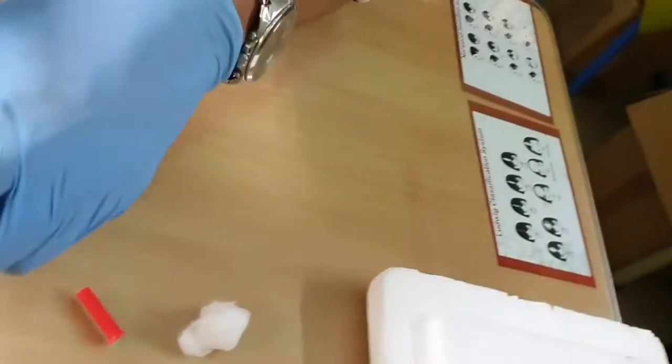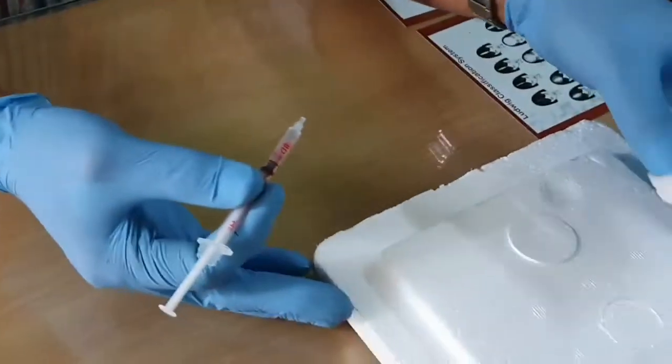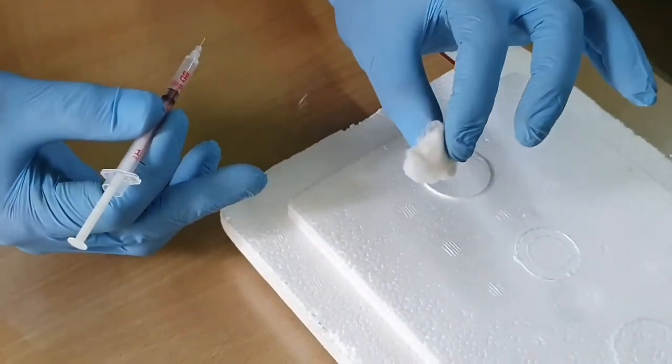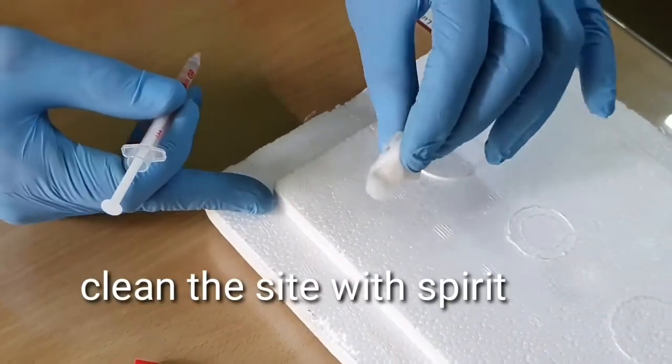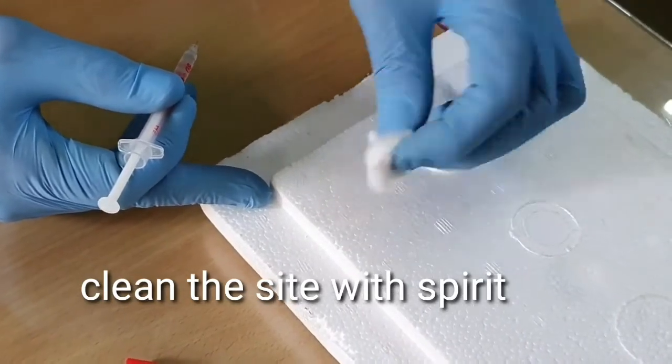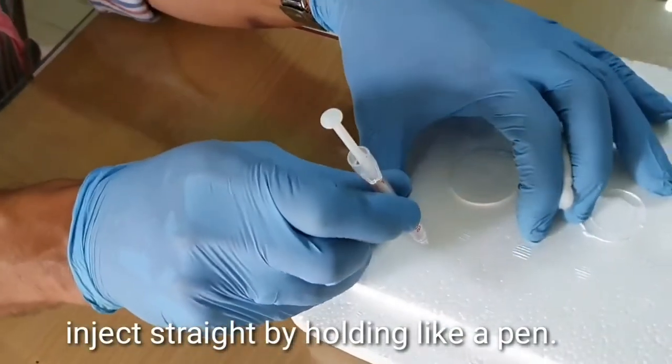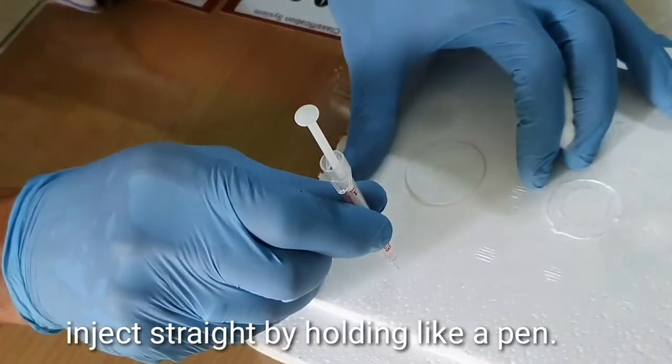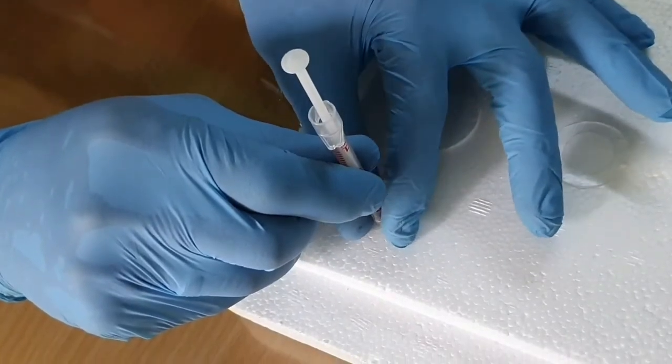Now again, hold it like a pen. I'm going to show it on a board instead of the body. You have to clean the site with spirit, and you hold the pen straight and inject. Now you stabilize the syringe with your left hand so that when you inject, the needle doesn't move.